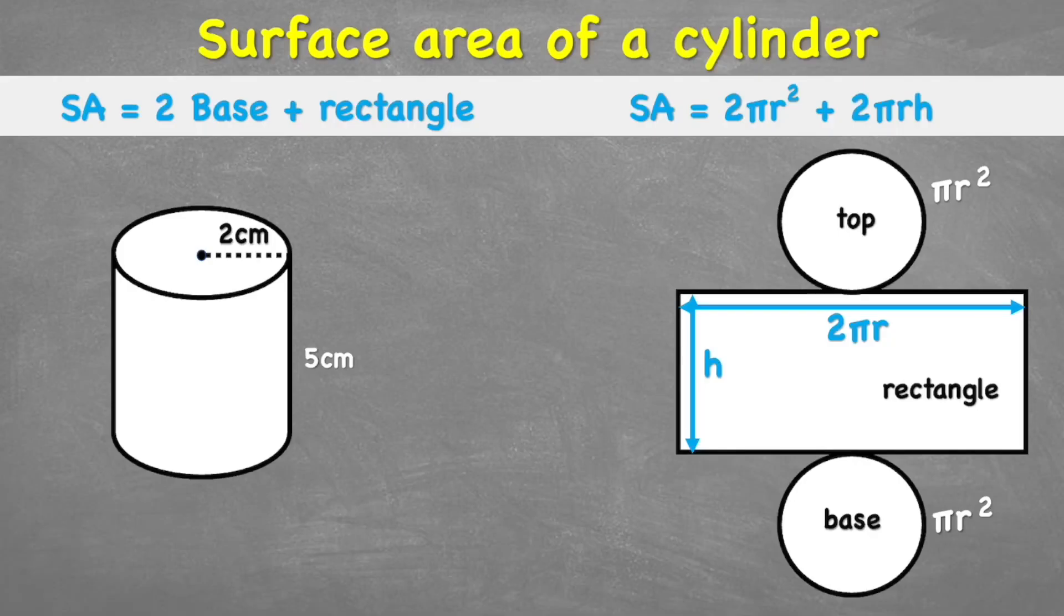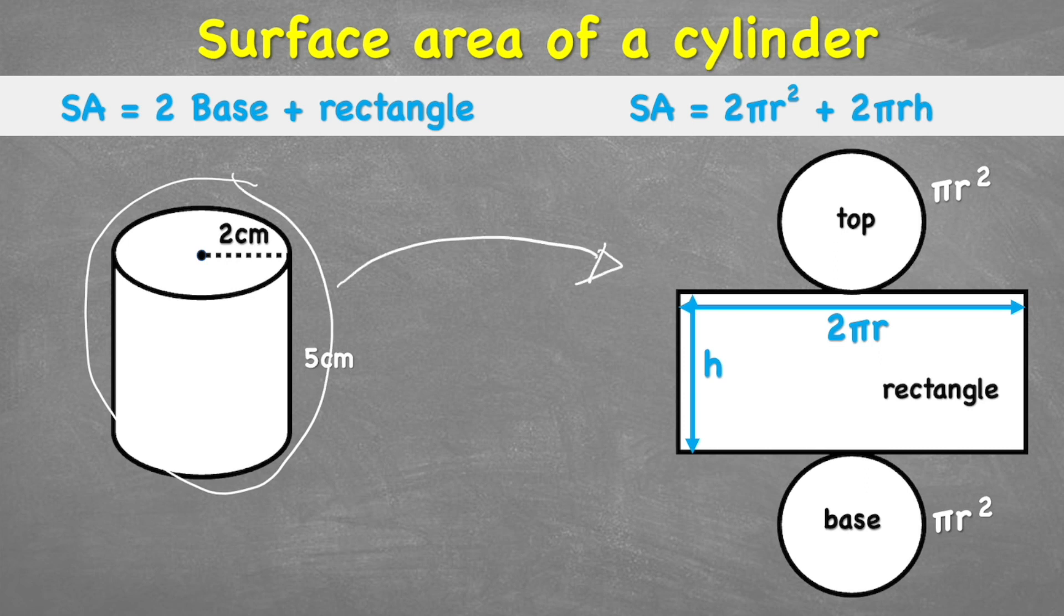Okay, so first of all, what does surface area mean? Well, the surface area is the 2D measurement which measures the entire area of the skin or the wrap around this 3D shape. So you can see here we have our 3D cylinder, but over here on the right, this is our 2D net of this 3D cylinder. We're measuring that two-dimensional flat area.